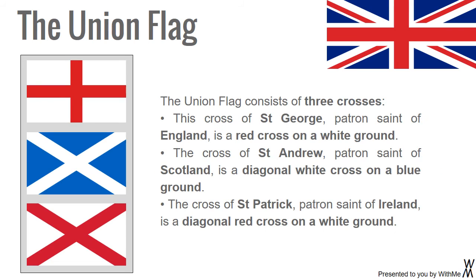The Union Flag consists of three crosses. The Cross of St George, patron saint of England, is a red cross on a white ground. The Cross of St Andrew, patron saint of Scotland, is a diagonal white cross on a blue ground. The Cross of St Patrick, patron saint of Ireland, is a diagonal red cross on a white ground.